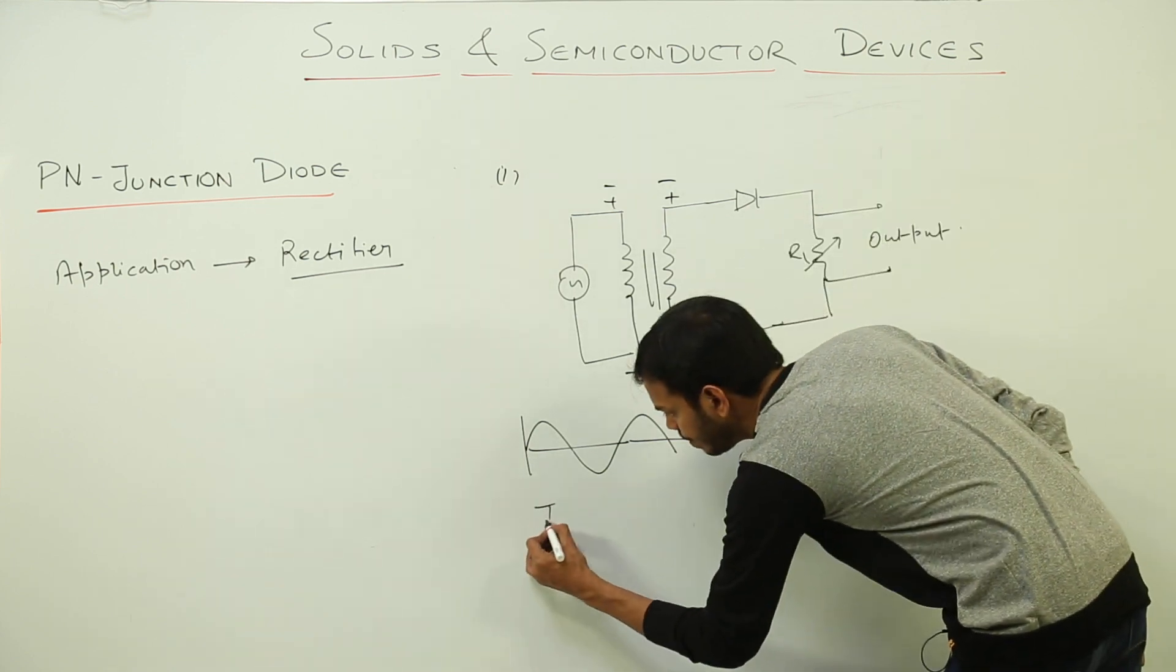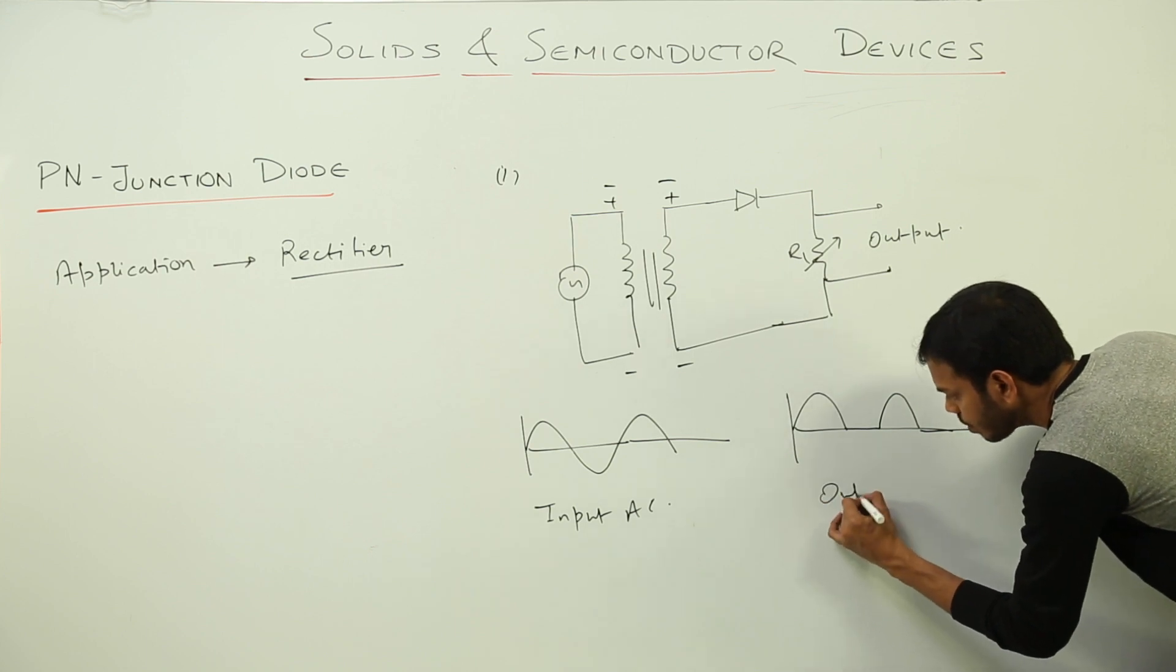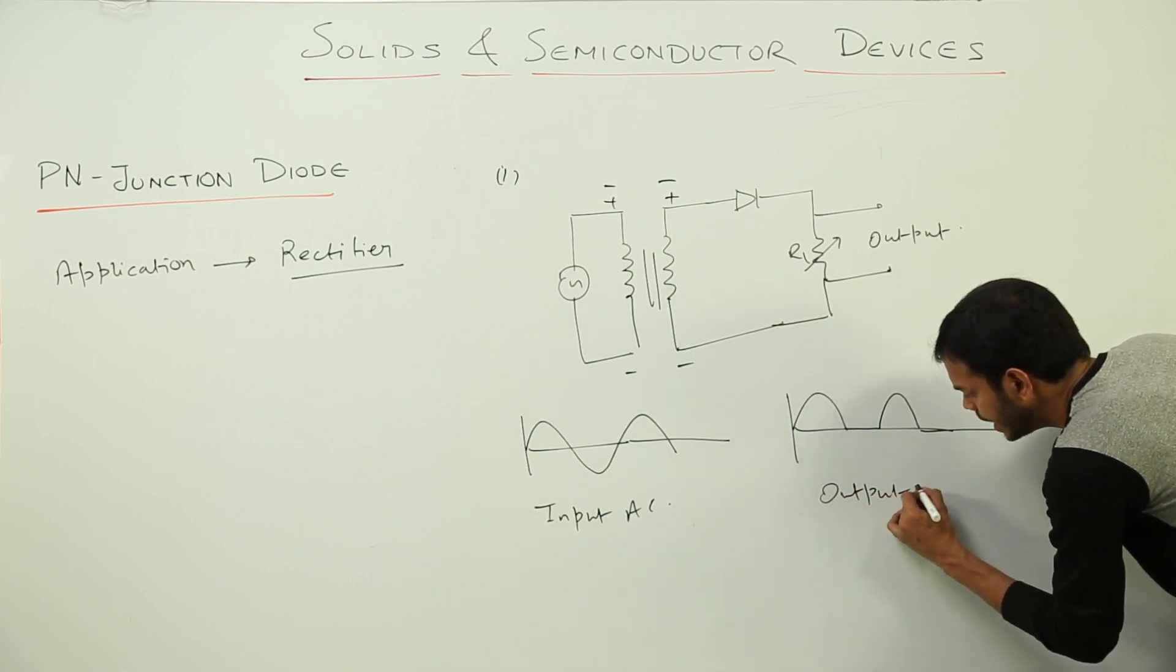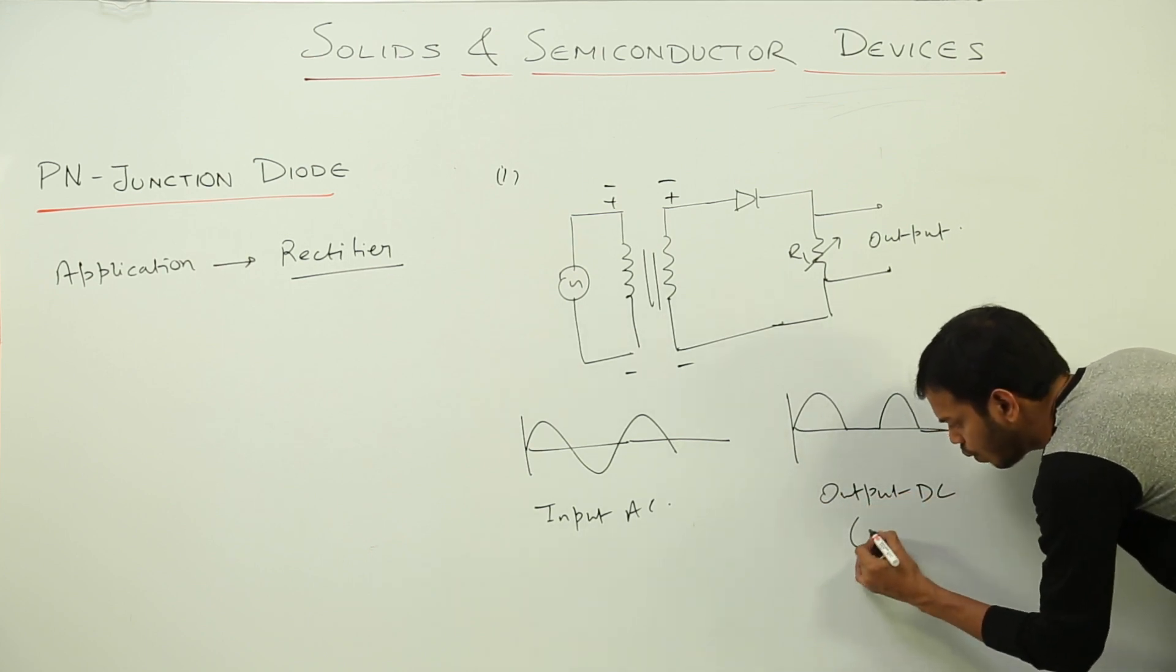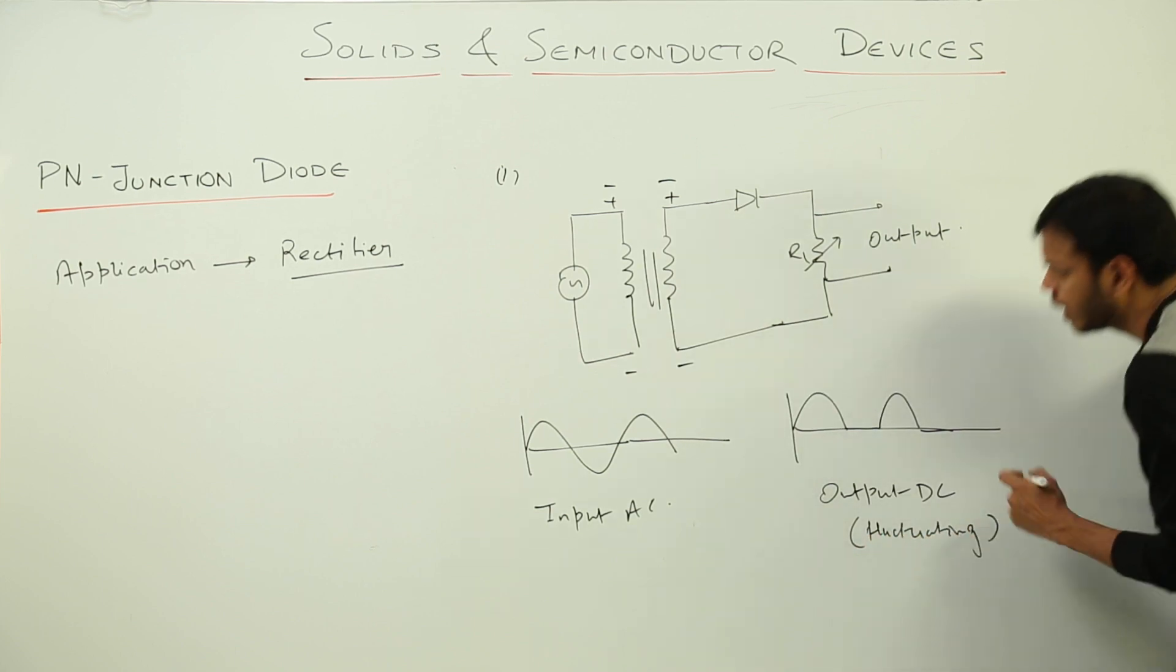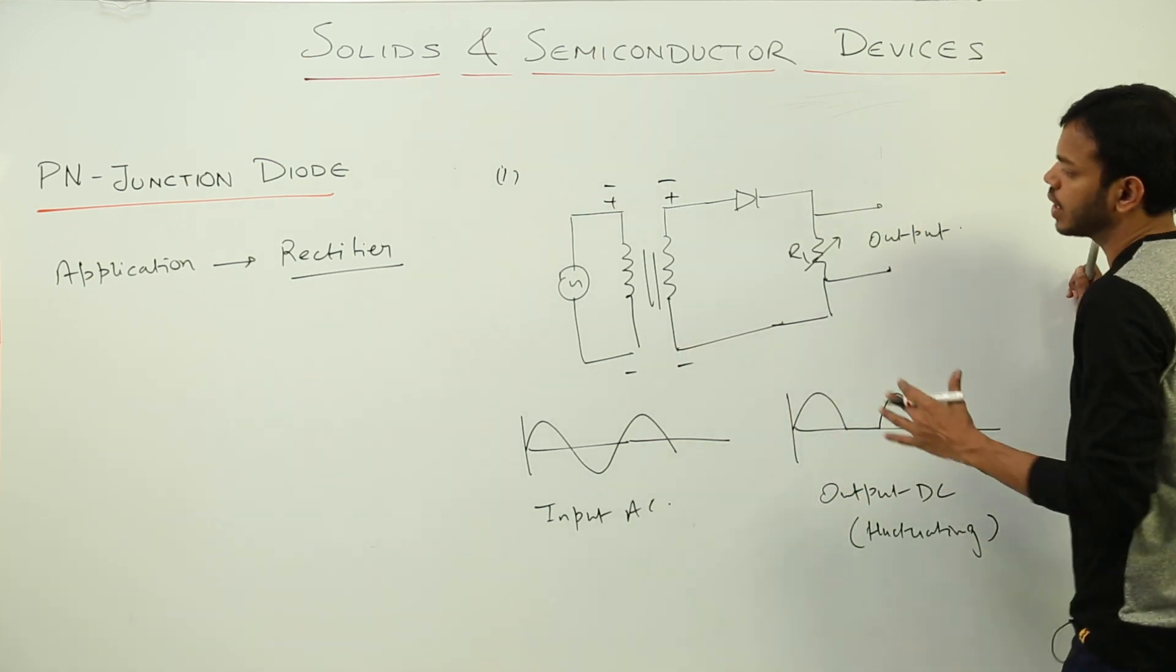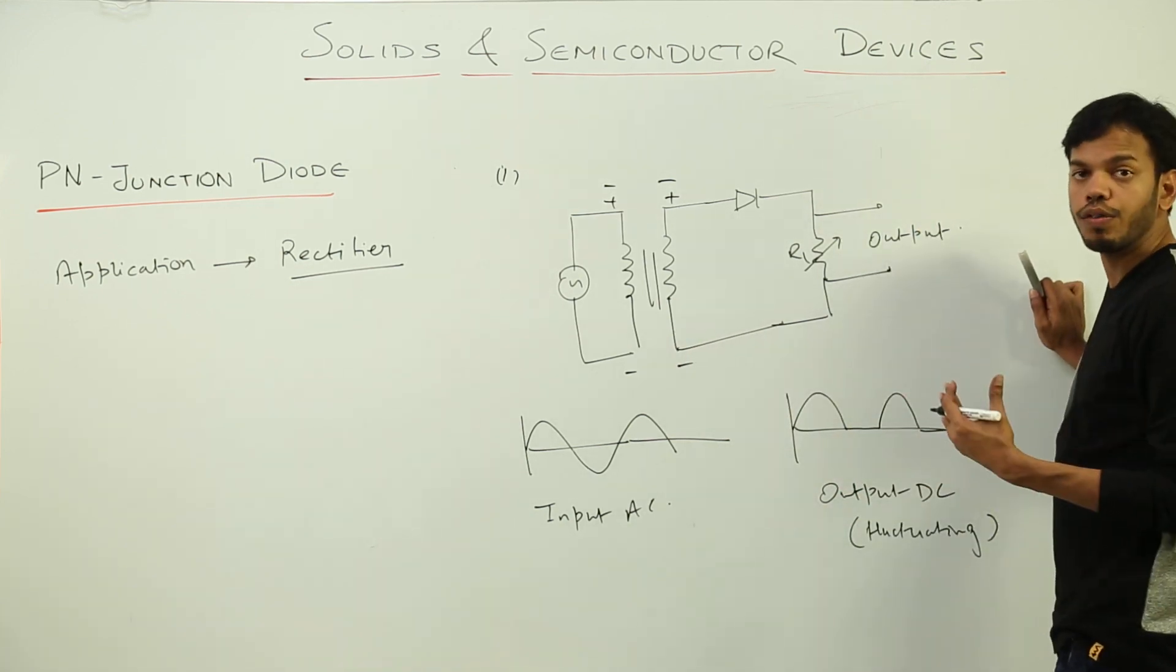So this is how half of the cycles of AC is converted into DC. This is input AC and this is output DC but it is what? Fluctuating in nature. So this is how diode is used as rectifier but this type of construction converted only half of the AC waves from AC to DC. So this is called half wave rectifier.